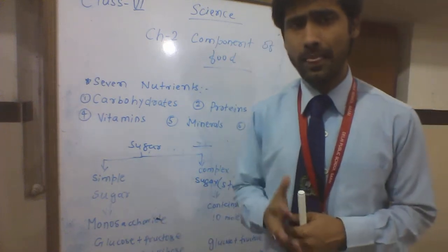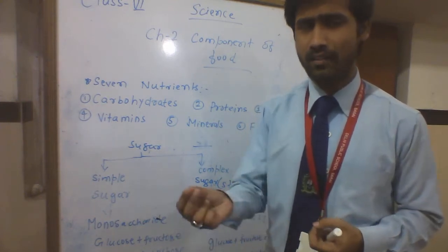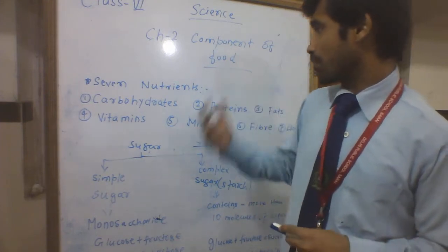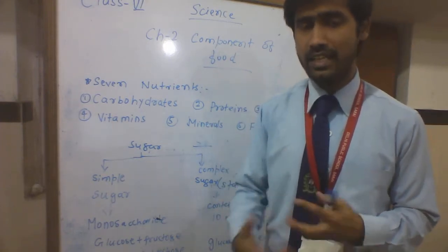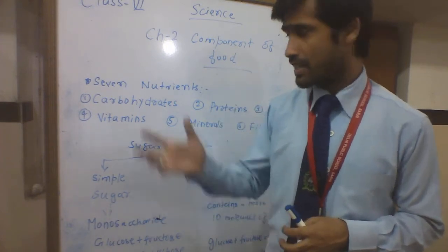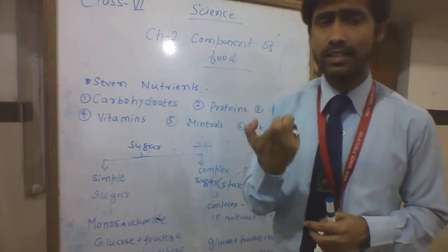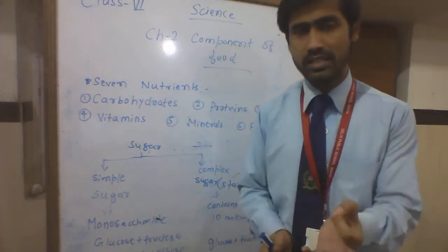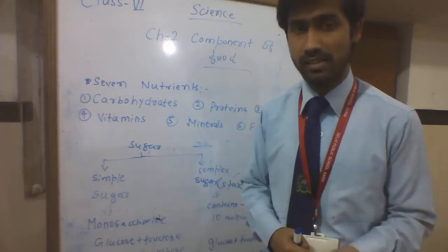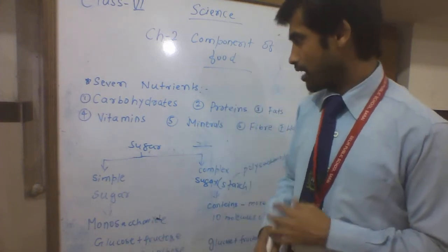Now here we learn about components of food. The literal meaning of 'components' is parts — 'tukra' in Hindi. The components of food are the different materials in the food we eat, and these are called nutrients. Nutrients are the chemical substances present in our food which give us energy and materials needed by the body to live and grow.